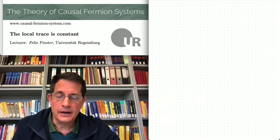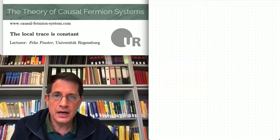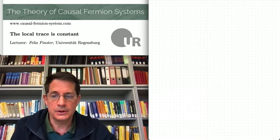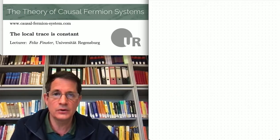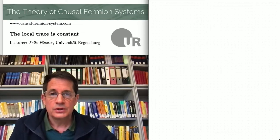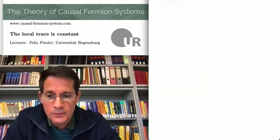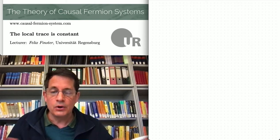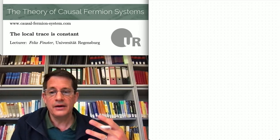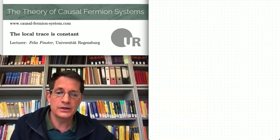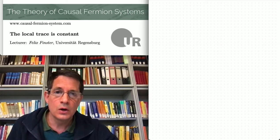Hello everybody and welcome back. In the introductory videos I introduced causal variational principles as a simplification and generalization of the causal action principle. It was a simplification because we left out two of the constraints, namely the trace and the boundedness constraints. At the same time it was a generalization because we replaced the set of linear operators curly F in the definition of causal fermion systems by a general possibly non-compact manifold. In the introductory videos I also derived the Euler-Lagrange equations for causal variational principles.